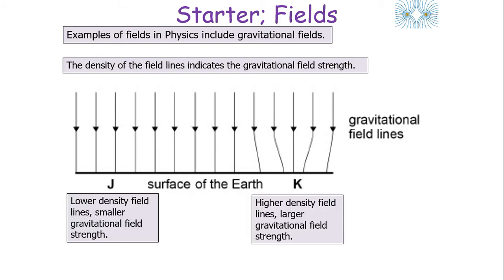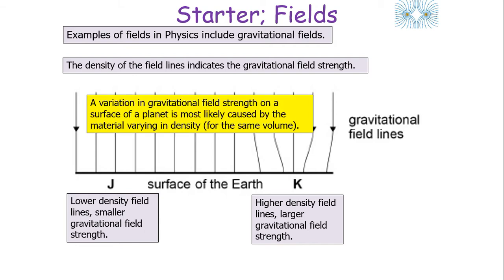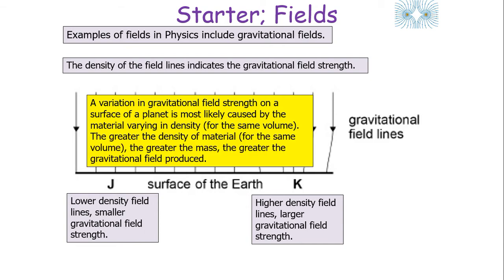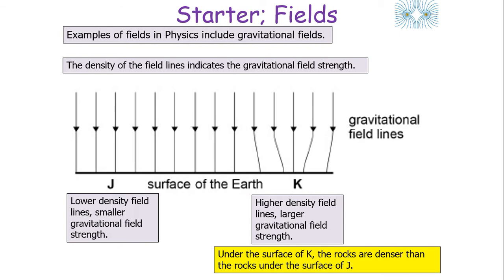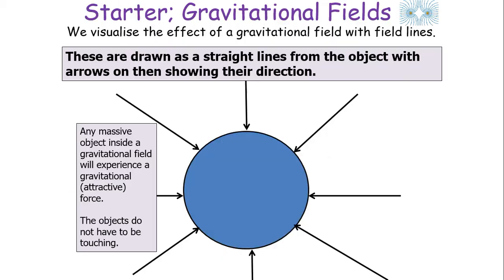The density of field lines indicates the gravitational field strength. In this example, J has a lower density of field lines and so a smaller gravitational field strength, whilst K has a higher density of field lines and a larger gravitational field strength. This variation is likely caused by the material varying in density for the same volume — the rocks under the surface of K are denser than those under J, producing a greater gravitational field.